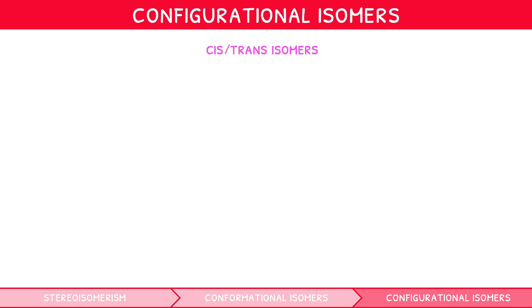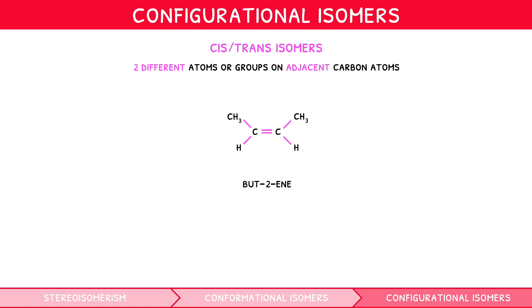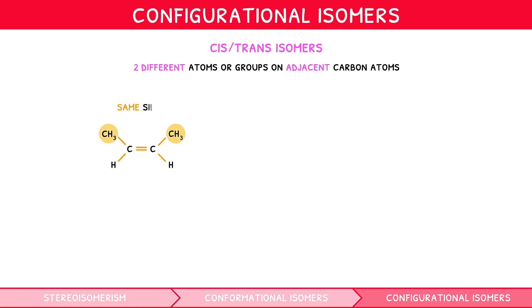Cis-trans isomers occur due to the presence of two different atoms or groups on two adjacent carbon atoms. Let's consider the example of but-2-ene. If we draw this to focus on the double bond, we can see that each carbon either side of the double bond has two different groups attached: a CH3 and H group. Like with eclipse and anti-isomers, we could draw the two groups on either carbon in each of the two positions. If the same two groups are on the same edge of the double bond, we call this a cis-isomer, and it would be named cis-but-2-ene.